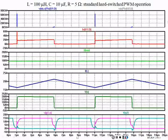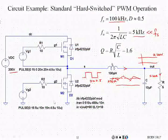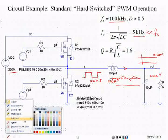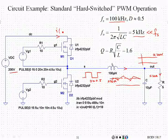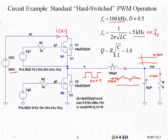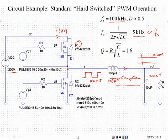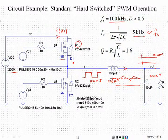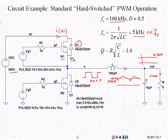Everything is straightforward from your introductory class. This I_x of U1 current is the current feeding right here — the current going through the upper switch device U1. When we say U1, it's actually a combination of the MOSFET M1 and the anti-parallel diode D1. The combination of these two is what is called U1.